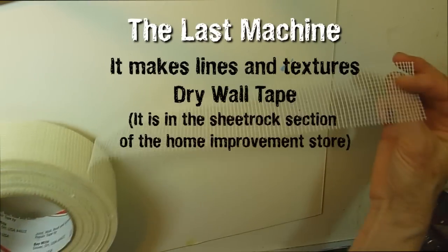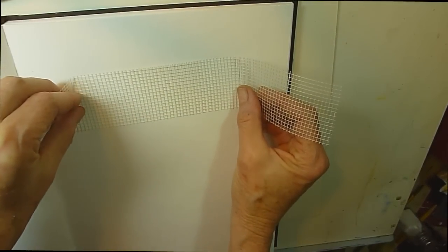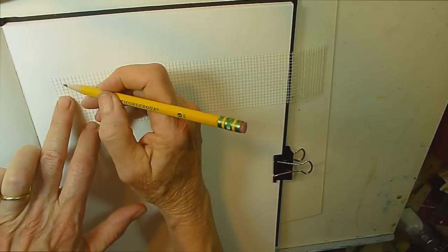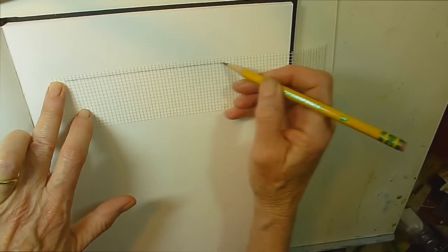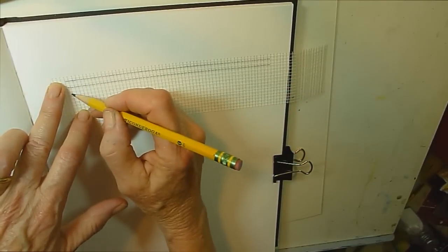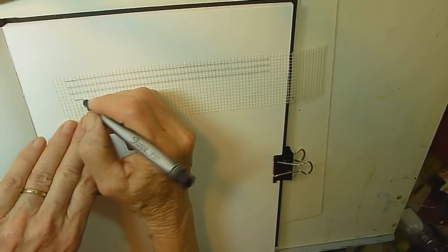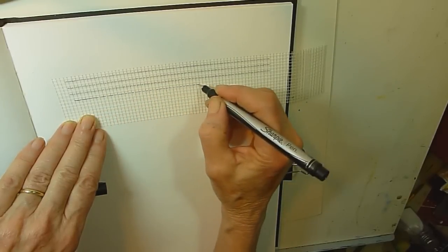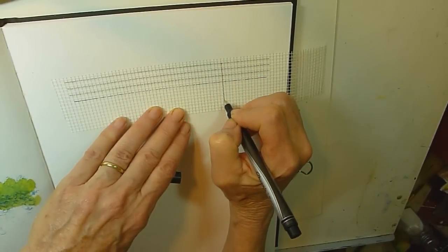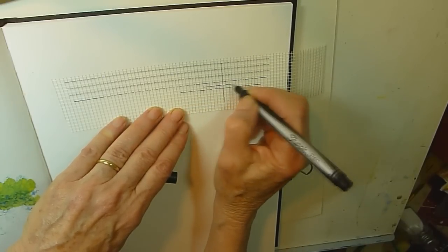Our next machine is found at a home improvement store. It can make lines and textures. It comes with a little sticky on the back, so I just adhere it to my page gently. And then I can trace directly through one of the little grid areas. And I can use a pencil, so I can erase those lines later if I like, or I can leave them. And if I like a darker line, I can use a pen. And I can go horizontally or vertically and make whatever pattern I would like. And I can add text to that later if I want.